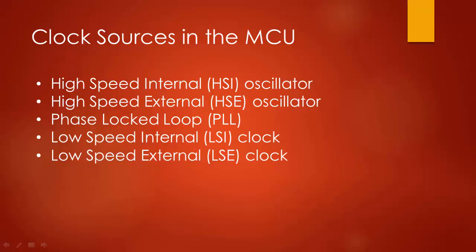These are the different clock sources available in a typical microcontroller: High-speed internal RC oscillator, High-speed external oscillator, Phase lock loop, Low-speed internal clock, and Low-speed external clock. Remember that each clock can be turned on or off as required. Turning off unused clocks reduces the power consumption of the microcontroller.